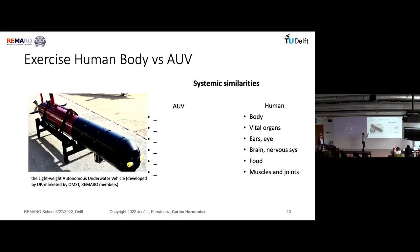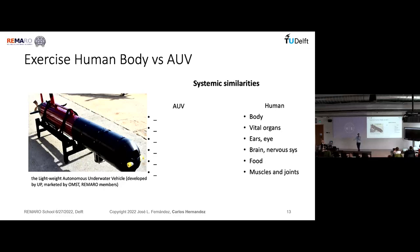Let's get active now. We have the lightweight autonomous underwater vehicle developed by University of Porto and marketed by OMST, both partners in the REMARO project. If we compare an autonomous underwater robot with humans, parts of us perform specific roles: the body, vital organs, ears, eyes, brain, nervous system, food, and muscles and joints. What does the body correspond to in the case of an underwater robot?